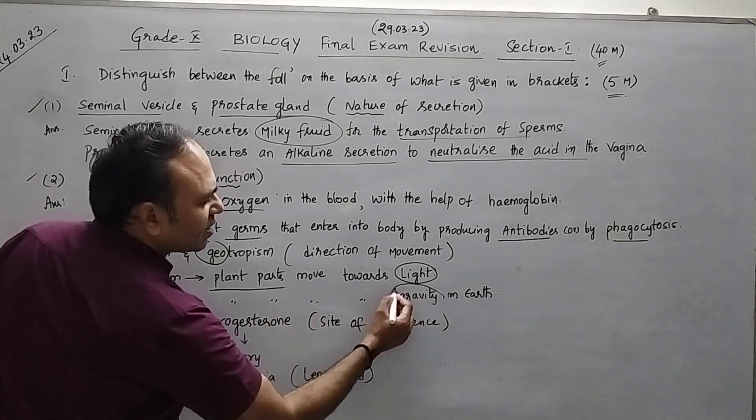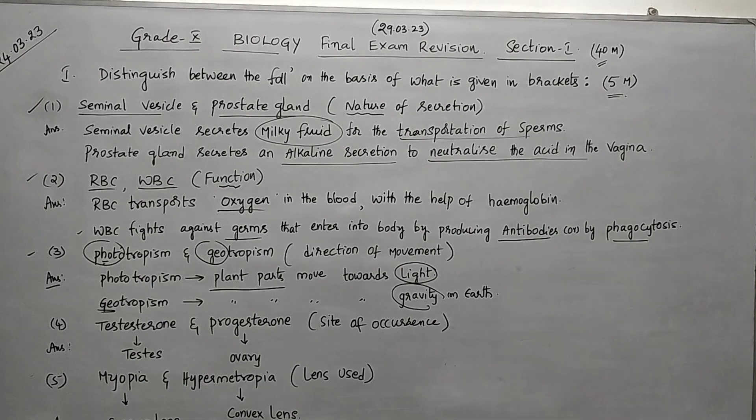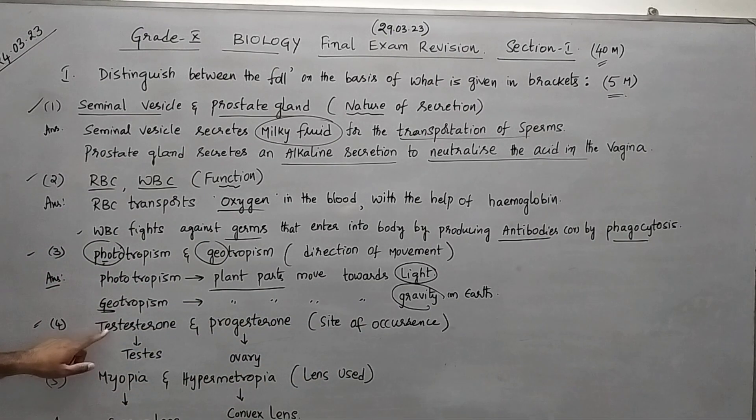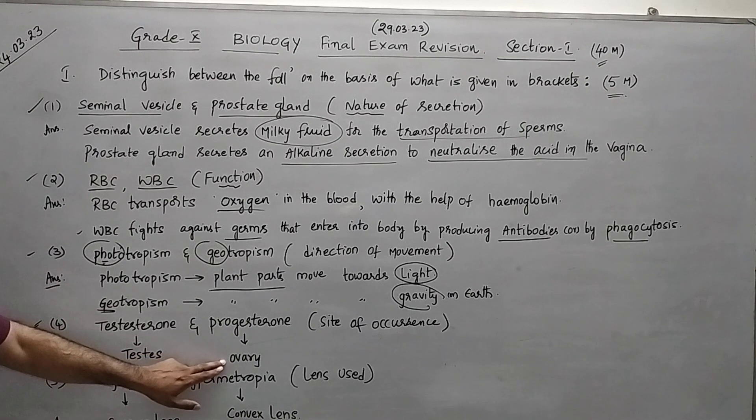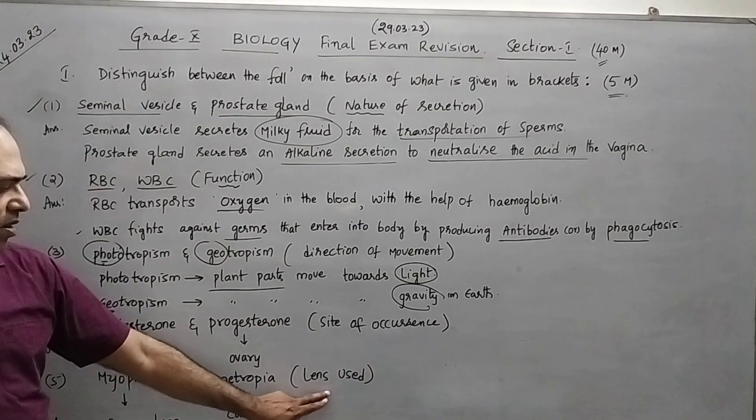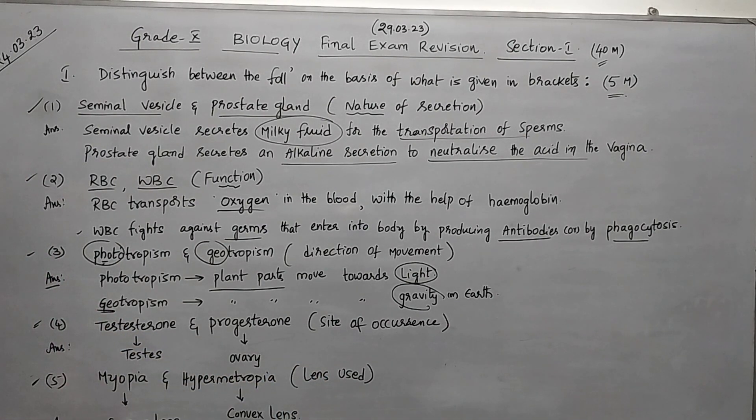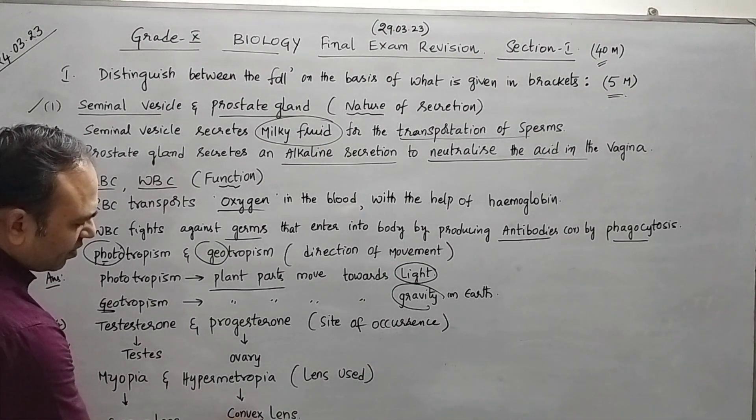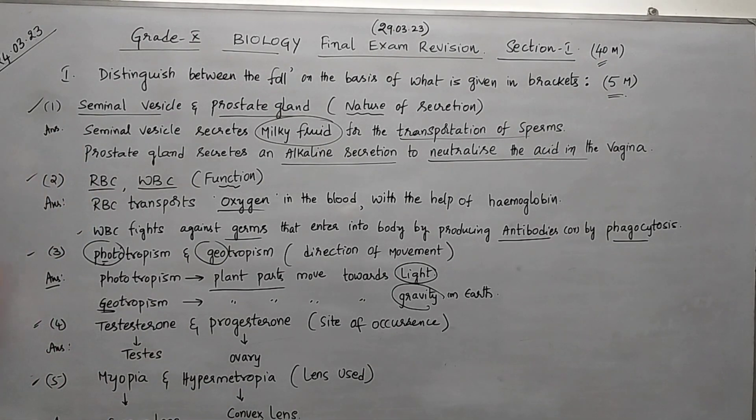Photo represents light, so the plant parts will move towards the light. Geo represents gravity, therefore plant parts will move towards gravity or towards earth. Next, testosterone and progesterone, site of occurrence - testosterone is present in testes and progesterone is present in the ovary. Then myopia and hypermetropia - how do you correct them and what are the lens used? In case of myopia use concave lens, and hypermetropia convex lens are used. Copy these five questions. Let's move to question number six.